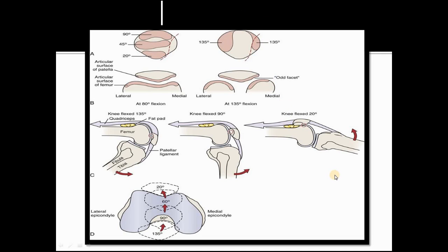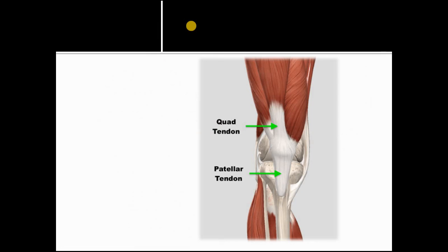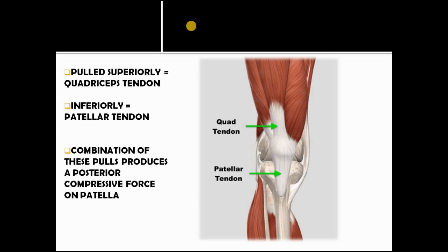This is some basic anatomy related to the patellofemoral joint. Now, the patellofemoral joint can undergo very high stresses during typical activities of daily living because as the knee flexes and extends, the patella is pulled superiorly by the quadriceps tendon with the pull resisted inferiorly by the patellar tendon.